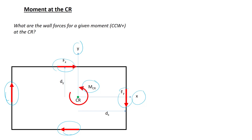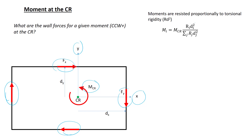The physical direction is given in the diagram, but I'd also like to present an equation that can help you determine the direction directly from the algebra. The basic concept at play here is that moments are resisted proportionally to torsional rigidity, rd². Given the moment at the center of rigidity, the moment in any given lateral component is equal to that component's torsional rigidity divided by the total torsional rigidity.